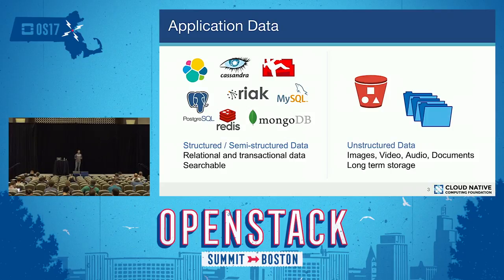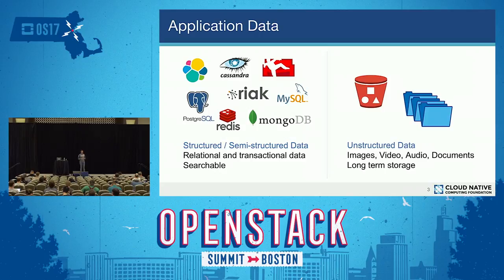When we talk about application data, if we divide it on a very high level, we can classify them as structured and unstructured. Media, log files, and pictures are mostly unstructured data. You can put these into object storage, or use file shares or NAS storage. Then you have application data which is more relational, transactional data that you want to query. This kind of data is usually stored in databases like MySQL or Postgres — SQL databases — or in NoSQL databases, which are becoming very popular in cloud-native programming because you can scale them horizontally.